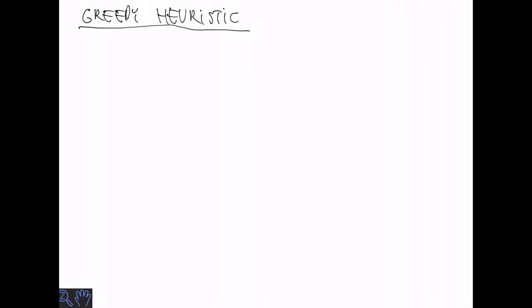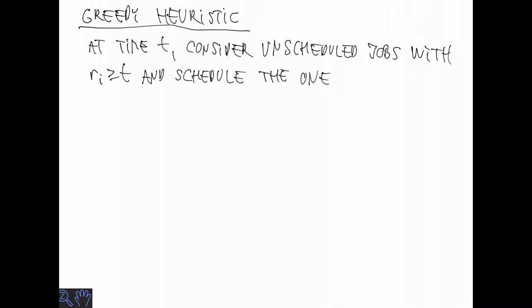There's a natural greedy heuristic that we can employ. At time t we consider all the unscheduled jobs that have release time greater than or equal to t and schedule the one with the earliest due time di.